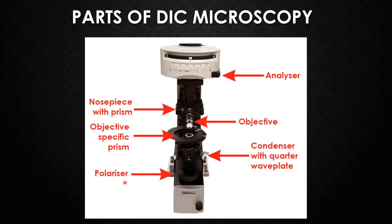The second component is the condenser prism, also called the Wollaston prism or Nomarski prism. This condenser is a beam-splitting prism which divides the polarized light beam emerging from the polarizer into two beams. If the prism is separated from the condenser, the light beams are transmitted to the condenser. However, it is often incorporated into the design of the condenser, and these light beams are known as ordinary and extraordinary, or specimen and reference beams.